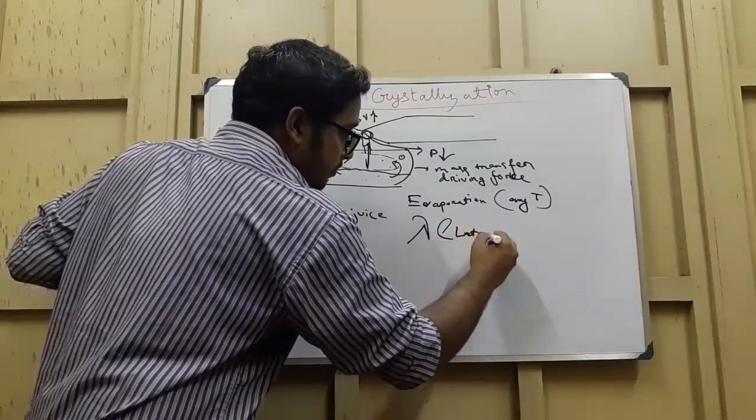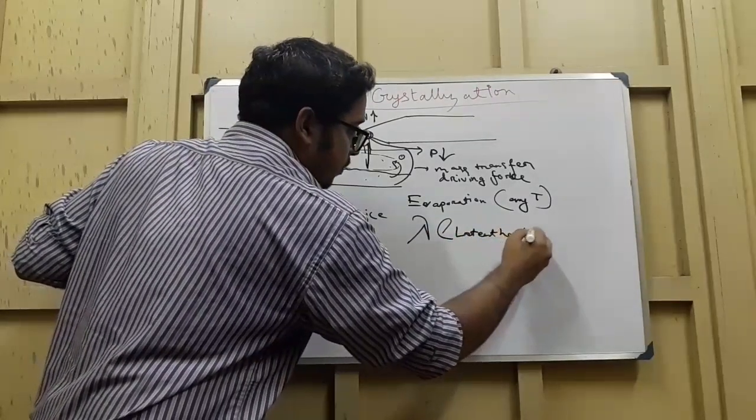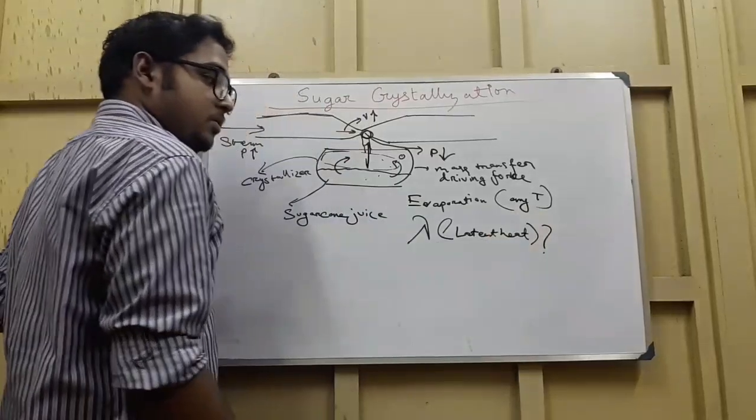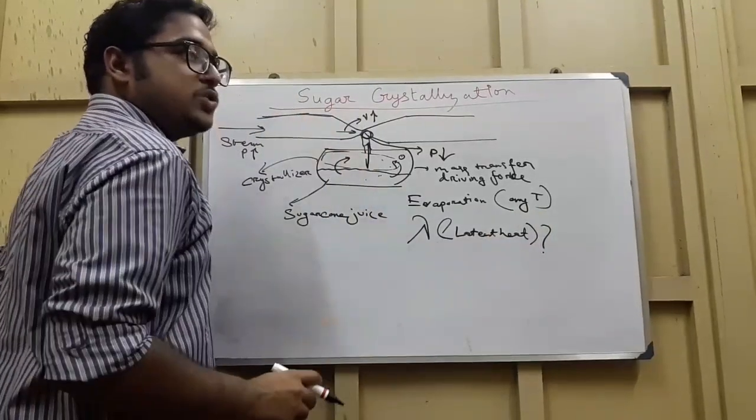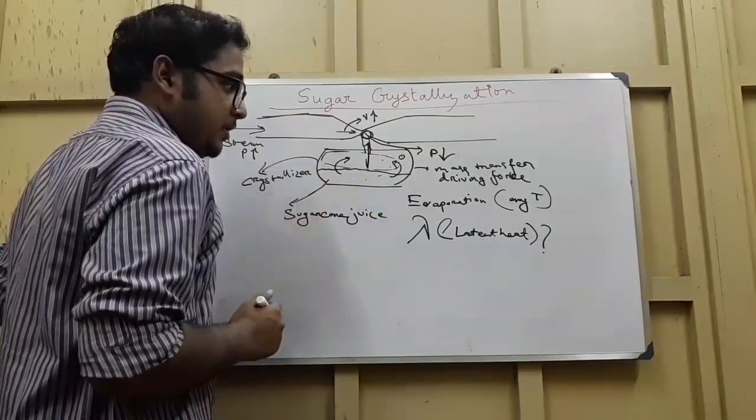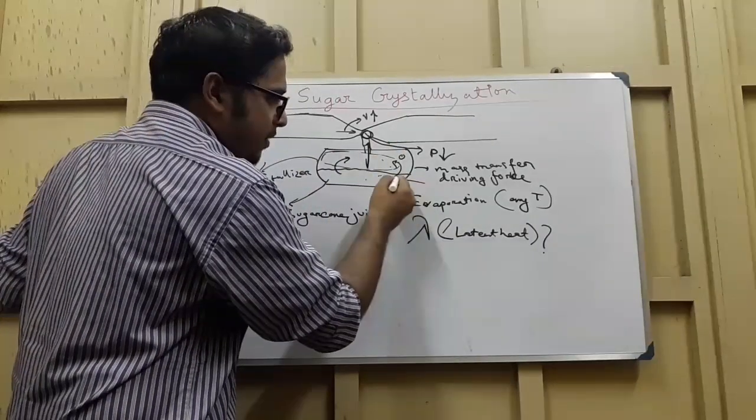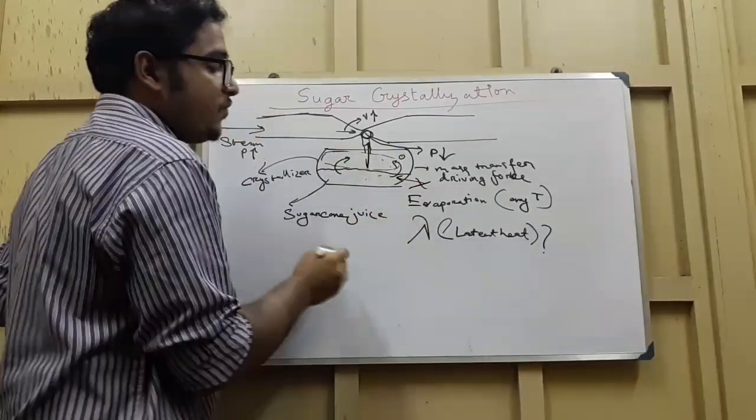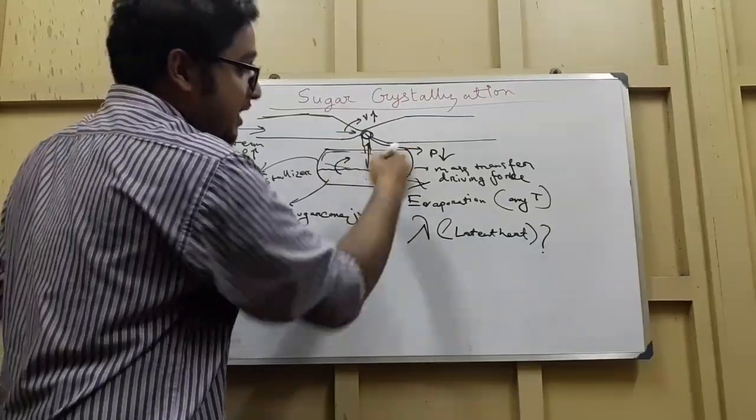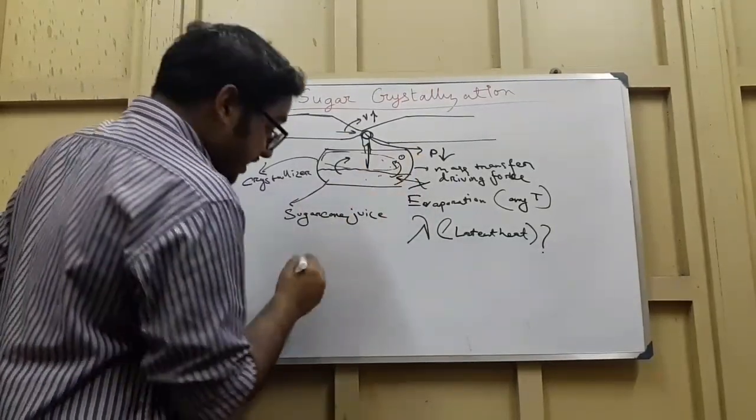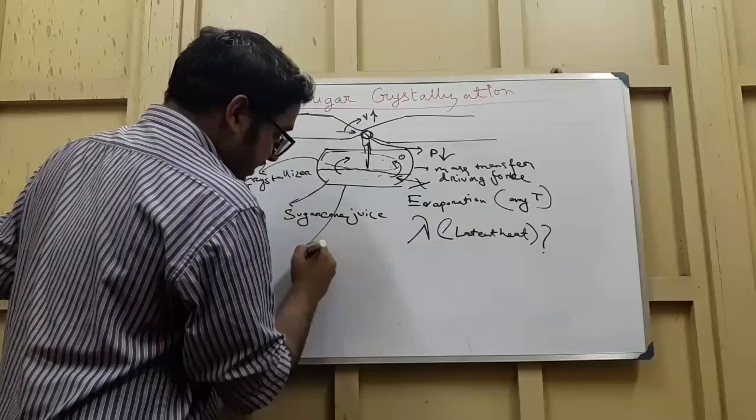Where will the latent heat come from? Who gives the latent heat to this water to evaporate? You may say that it comes from outside. No, it doesn't come from outside because the entire chamber is insulated.